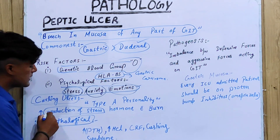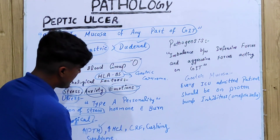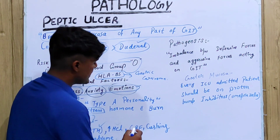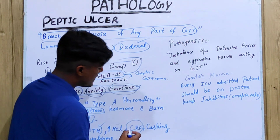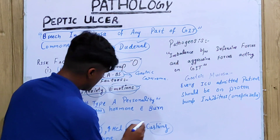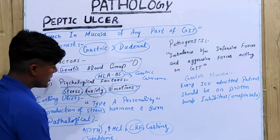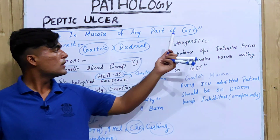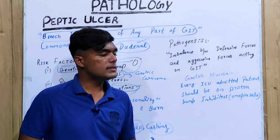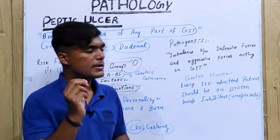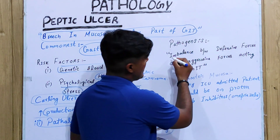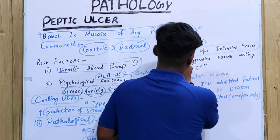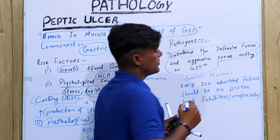Some pathological causes include increased parathyroid hormone level, increased production of HCL, chronic renal failure, and Cushing syndrome — all conditions in which we have a chance of developing this ulcer disease.